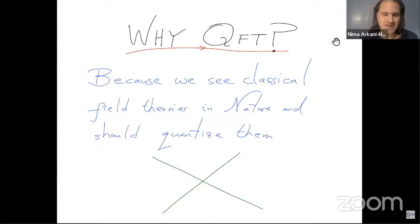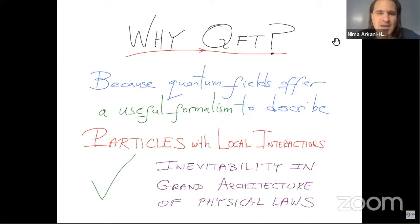A textbook answer, I imagine, from the middle part of the century would have been because we see classical field theories in nature and we should quantize them, but Weinberg was dissatisfied with this, and he promulgated a point of view, especially in his field theory books.